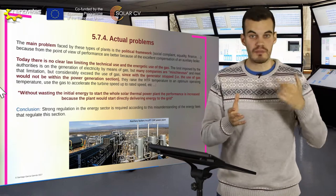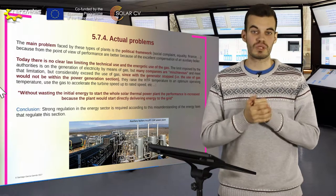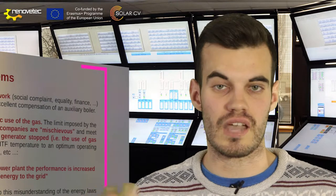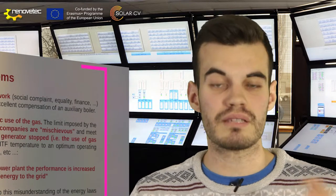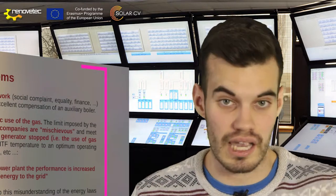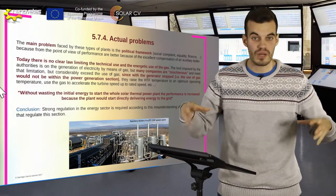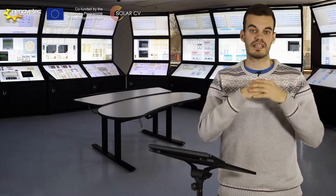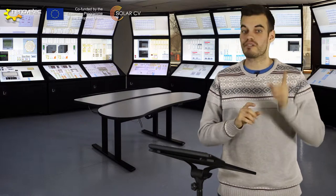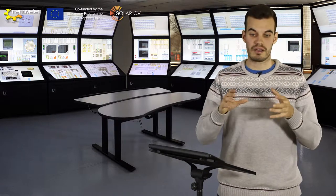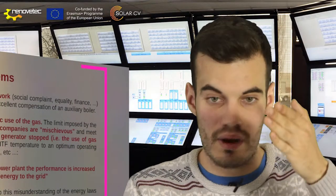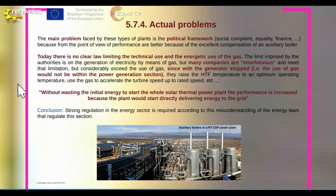As we saw in the previous picture, we have limited the use of this auxiliary boiler to increasing the temperature of the HTF. But many companies are mischievous and say: 'I am going to increase my HTF temperature with the generator stopped, so the production of this auxiliary boiler is not going to be computed in the plant's production. But I am also going to increase the turbine speed and other features, so that when the generator turns on we operate immediately, instead of waiting for the plant to increase the HTF temperature.'